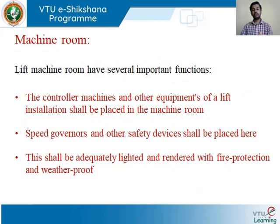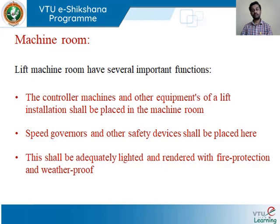Next we have the lift machine room, kept on top of the lift shaft. The entire controlling system — machines and equipment of the lift installation — is placed in the machine room. Speed governors and other safety devices shall also be placed there. It shall be adequately lit and rendered with fire protection and weather proofing, as there are many controlling machines inside that need to be properly maintained.